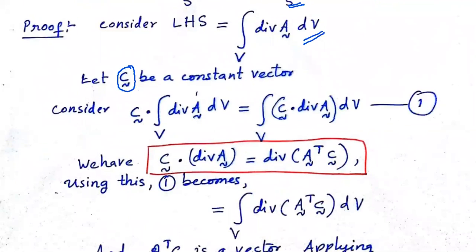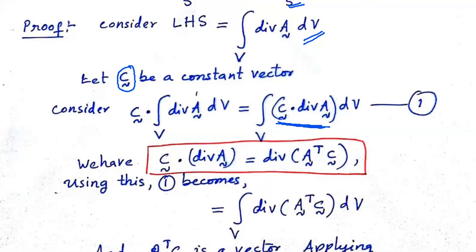Consider C dot the volume integral of divergence A dV. Since C is a constant vector, C can be taken inside the integral. We have the identity: C dot divergence A equals divergence of A transpose C. We have proved this relation using comma notation. So, in equation 1, C dot divergence A is replaced by divergence of A transpose C.